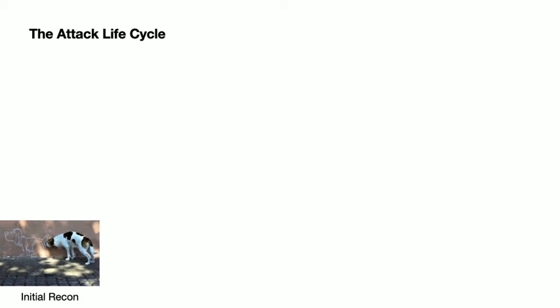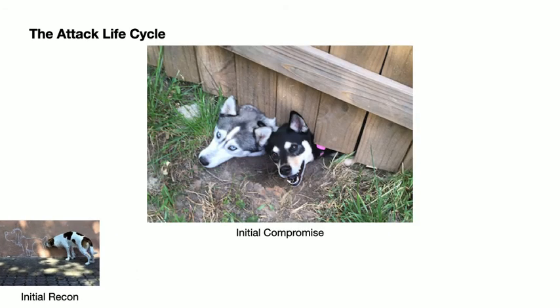After that, we move on to the initial compromise. Here our attackers will identify and exploit a vulnerability that allows them to gain access to some systems. This can take the form of triggering a remote code execution by way of a weakness in a library known to be used on the target systems, or it may involve tricking an employee into revealing their access credentials by way of phishing, or by installing malware on an employee laptop via a watering hole attack.